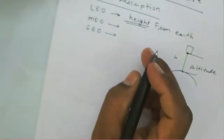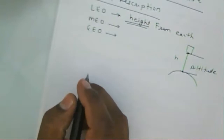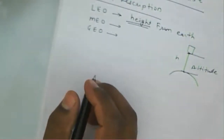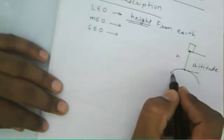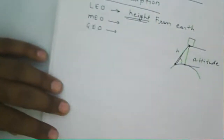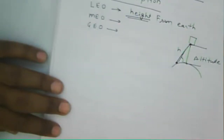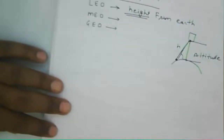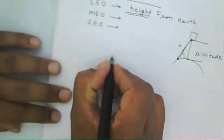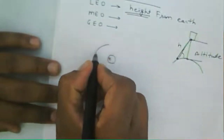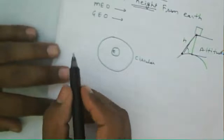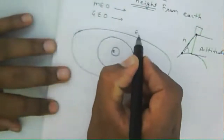Satellite orbits are classified not only based on height but also based on inclination. If the orbit is inclined, we call it an inclined orbit; otherwise it is a non-inclined orbit. Orbits are also classified based on eccentricity — the orbit can be circular or elliptical. Generally, we consider the satellite rotating in a circular orbit around the Earth, but sometimes the orbit is elliptical.